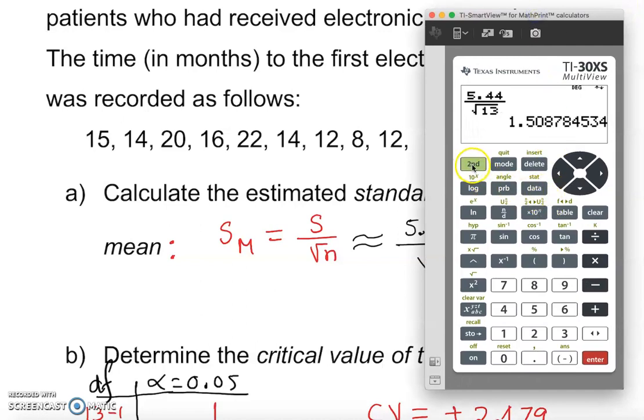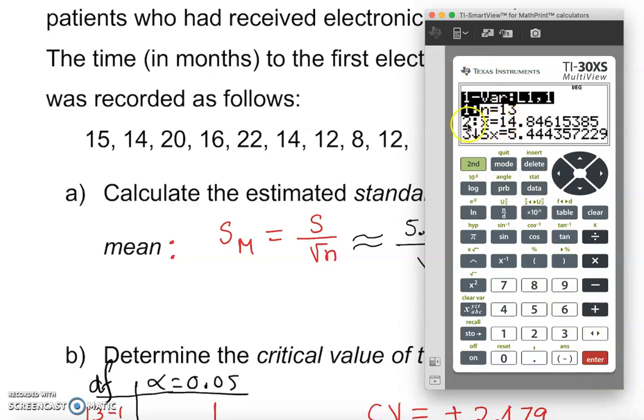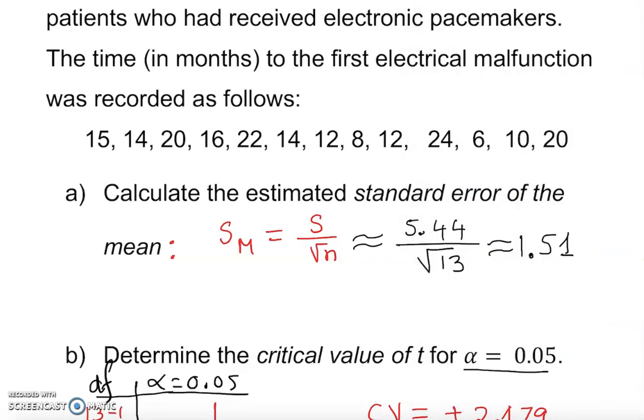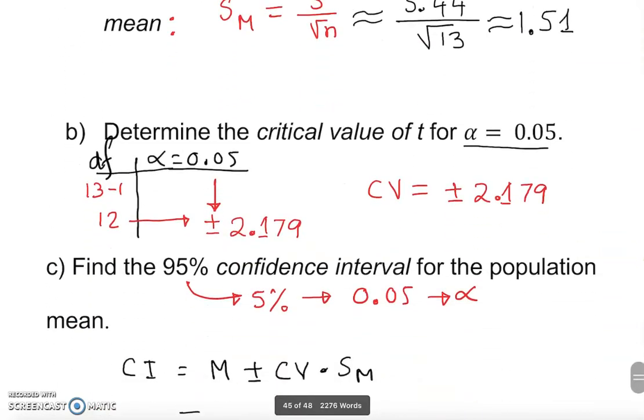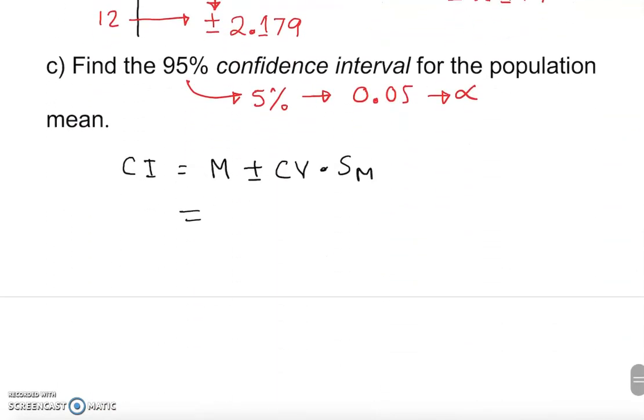Do we have that sample mean? I think we already have that stored. Second data enter, enter, enter. Yeah, actually it's stored. Sample mean is the second one, 14.85. So that's the sample mean, 14.85.